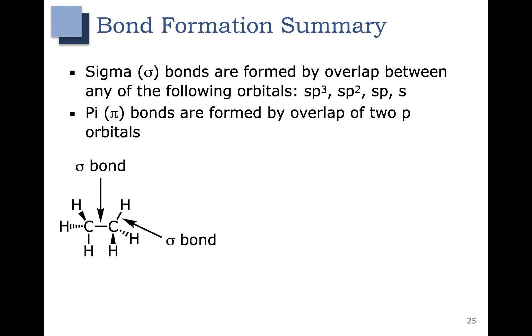The first example that we looked at was ethane. In ethane, the carbons are sp3 hybridized, so this sigma bond is formed by the overlap of two sp3 hybrid orbitals. This bond over here is formed by the overlap of an sp3 hybrid orbital with an s orbital.